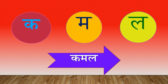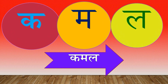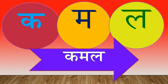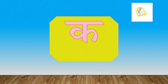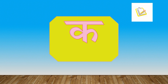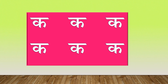चलिए, कमल शब्द अक्षर-अक्षर करते हैं: क-म-ल — कमल। फिर से बोलिये, क-म-ल — कमल। पहला अक्षर है क। फिर से बोलिये, क। अपनी कापी में क अक्षर लिखिये।